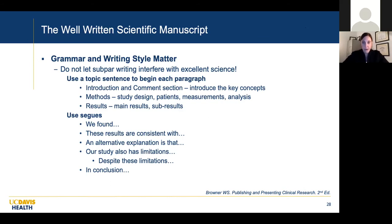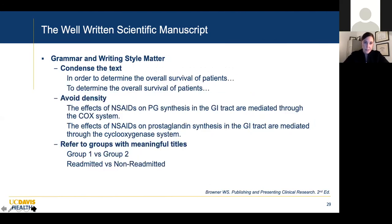Use a topic sentence to begin each paragraph. In the introduction and comment section, introduce key concepts. In the methods section, cover study design, patients, measurements, and analysis. In the results section, cover main results and sub-results. Use segues: 'we found that...' or 'these results are consistent with...' to make it flow and easy to read. Condense the text — I learned a lot when I took an eight-week scientific writing course at UCSF when I was in the lab. It totally changed my writing style. For example, instead of 'in order to determine the overall survival of patients,' just write 'to determine the overall survival of patients.' They mean the same thing with fewer words.